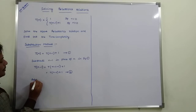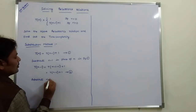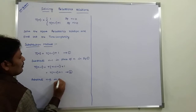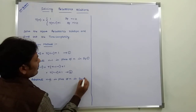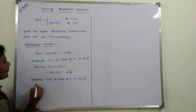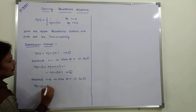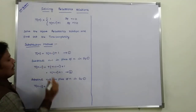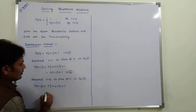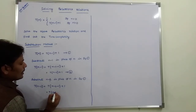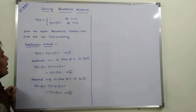Next, substitute n-2 in place of n in equation 1. So T(n-2) = T(n-3) + 1. This is equation 3.